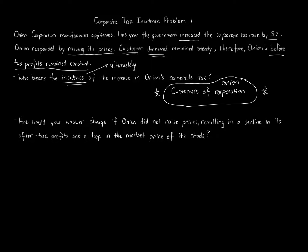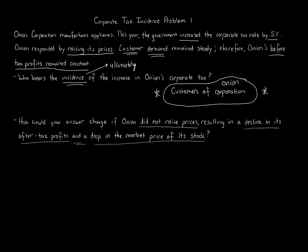Now the second variation: how would the answer change if Onion did not raise prices? They did not raise prices, resulting in a decline in after-tax profits and a drop in the market price of its stock. Now the corporation is going to have to pay more in taxes, and customers do not. This might be an elastic market — something with a lot of competition, like a technology industry — rather than an inelastic market like gasoline where price changes don't affect demand much.